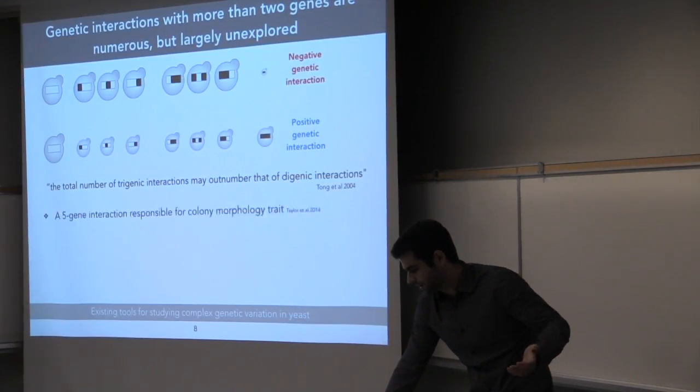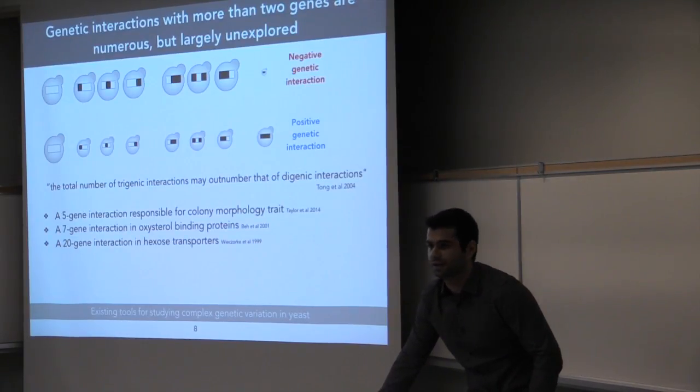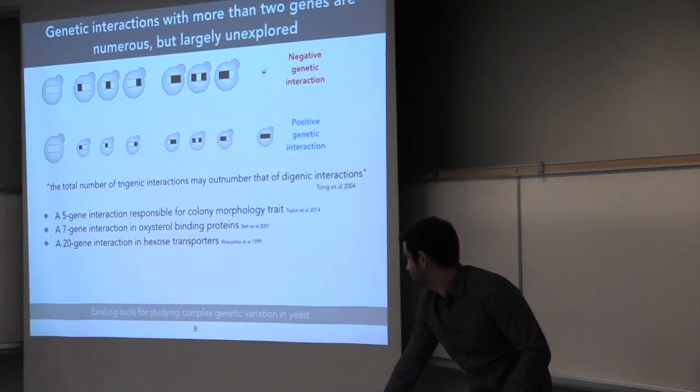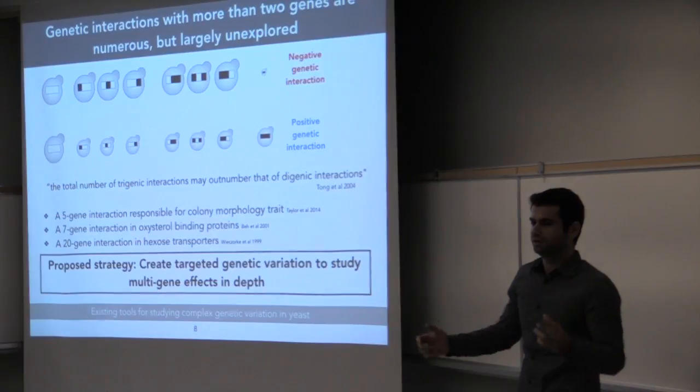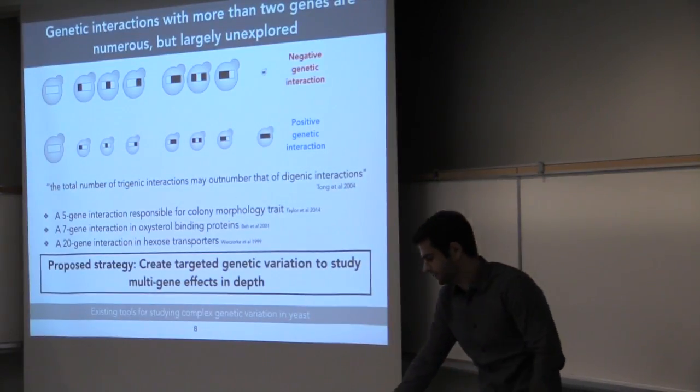And you don't have to stop there. There's a five gene interaction known, seven gene interaction, and I think the record now is a 20 gene interaction in yeast. So what we want to do is we want to create a trigenic variation in a population to study these multi-gene effects in depth.